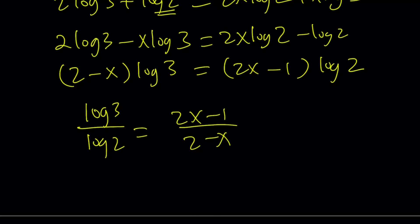So from here, we can write the log 3 over log 2 as 2x minus 1 over 2 minus x. Now notice that our expression, we were trying to evaluate 2 to the power of 2x minus 1 over x minus 2. That is pretty close. I just have to modify a little bit.